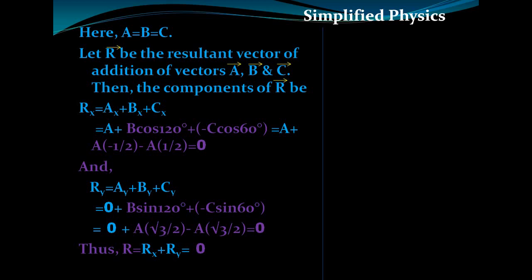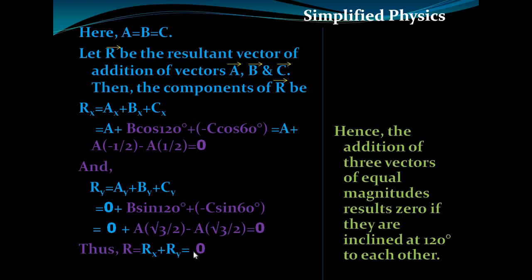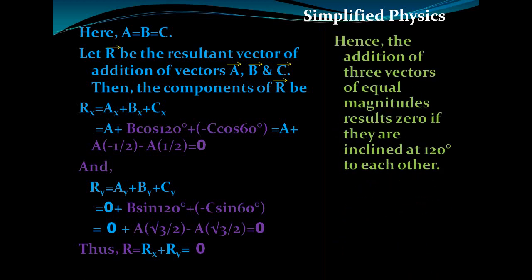Similarly for R_y: sin(120°) = √3/2 and sin(60°) = √3/2, so those terms also cancel, giving R_y = 0. Therefore the magnitude of the resultant R = √(R_x² + R_y²) = 0. We conclude that if three equal-magnitude vectors are inclined at 120° to each other, their addition results in zero.